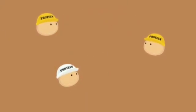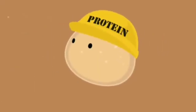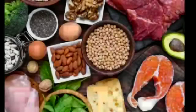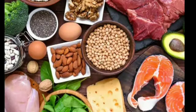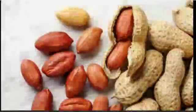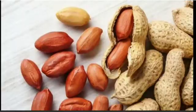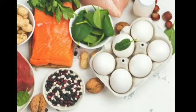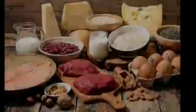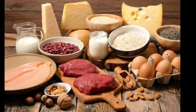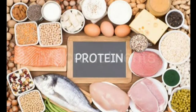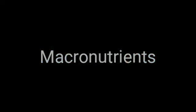Proteins are required in plenty during the growing years of a person's life. All the different dals, pulses, groundnuts, milk and milk products like yoghurt, khoya and paneer, eggs, meat and fish are rich sources of proteins. Our body requires carbohydrates, fats and proteins in large proportions. These food constituents are called macronutrients.